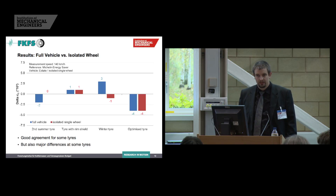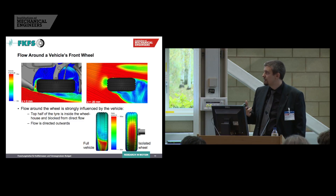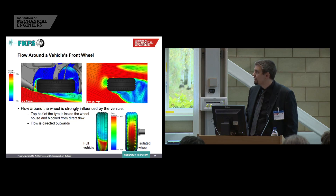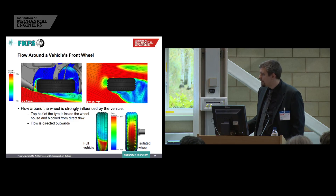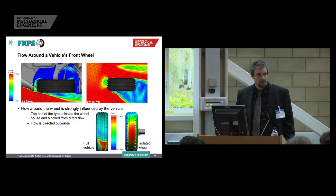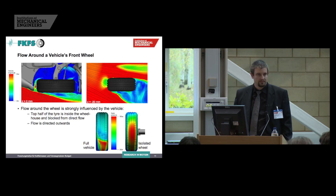However, for the other tires, the trends are totally different. This becomes clear when you look at the flow around the tire. On the vehicle, the tire is mostly shielded from direct flow due to the wheelhouse, and the flow is directed outwards — it is not approaching the tire in a straight way. Looking at the static pressure distribution in front of the tire, on the vehicle there is an area of high static pressure only in the lower part of the tire due to the wheelhouse shielding, whereas on the isolated wheel there is a quite high area of static pressure because it is directly approached by the flow. So it is no wonder that the results from the isolated wheel do not match the full vehicle.